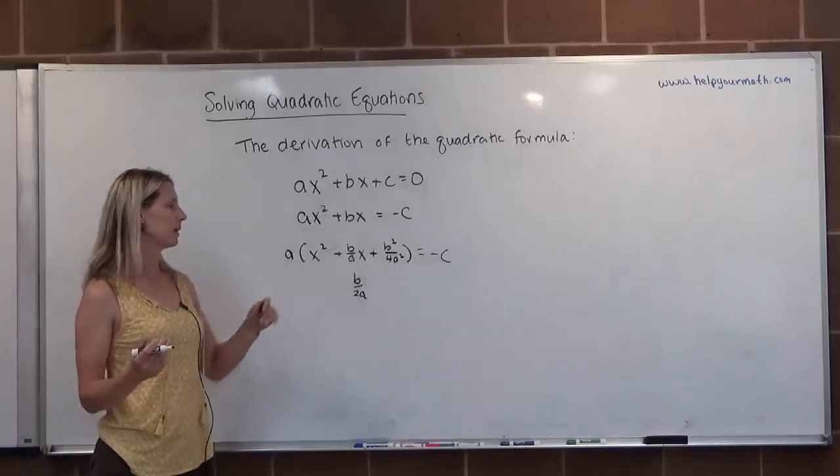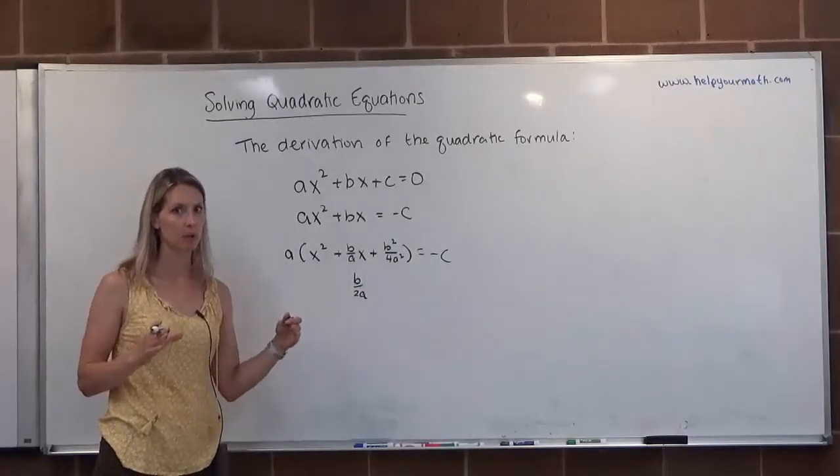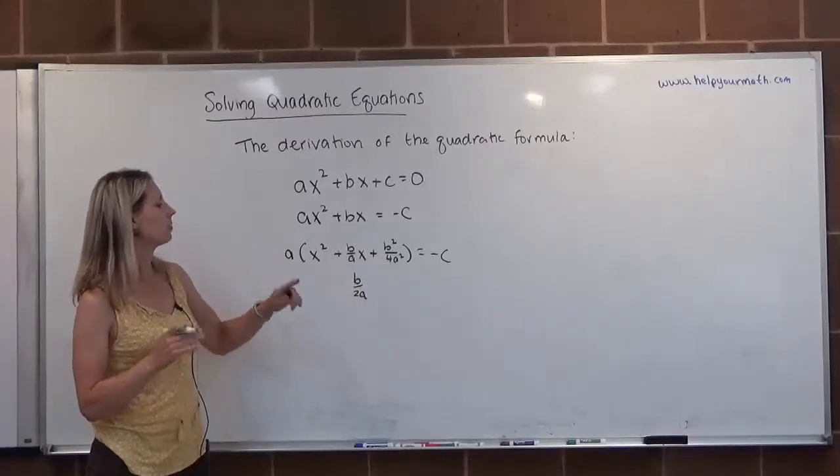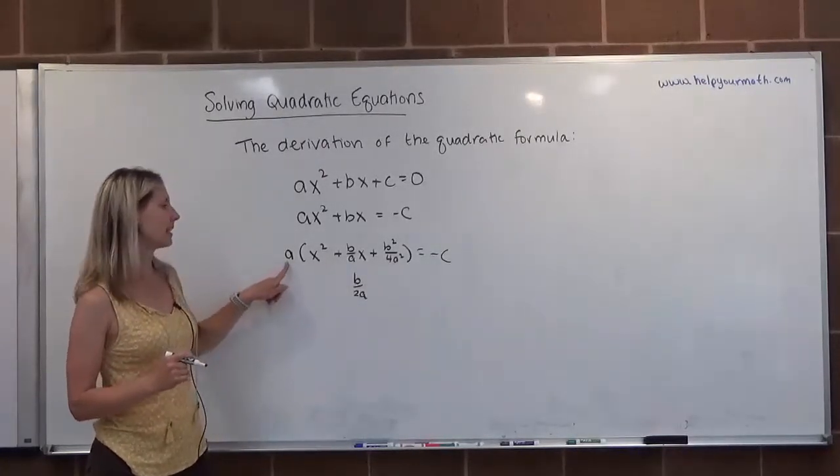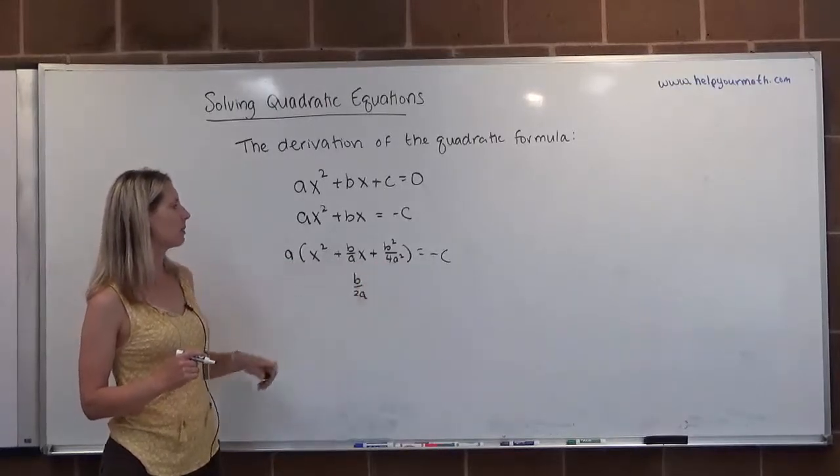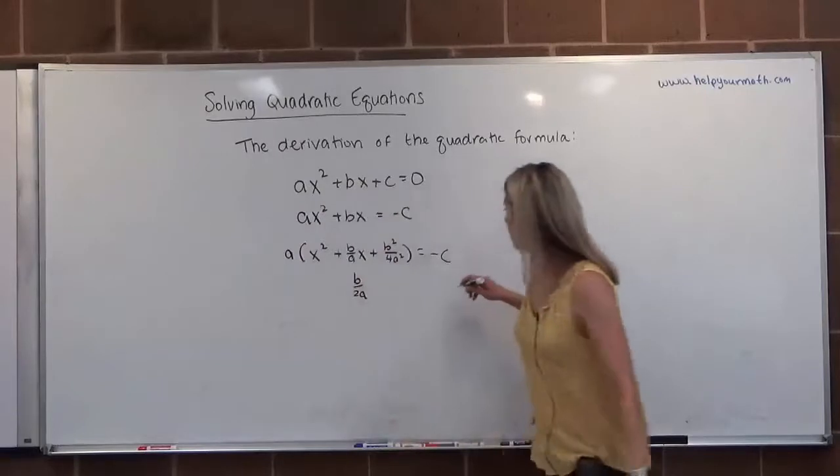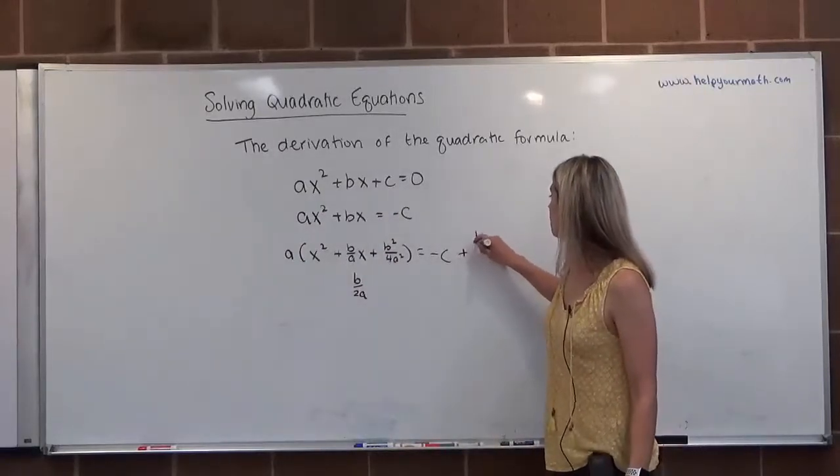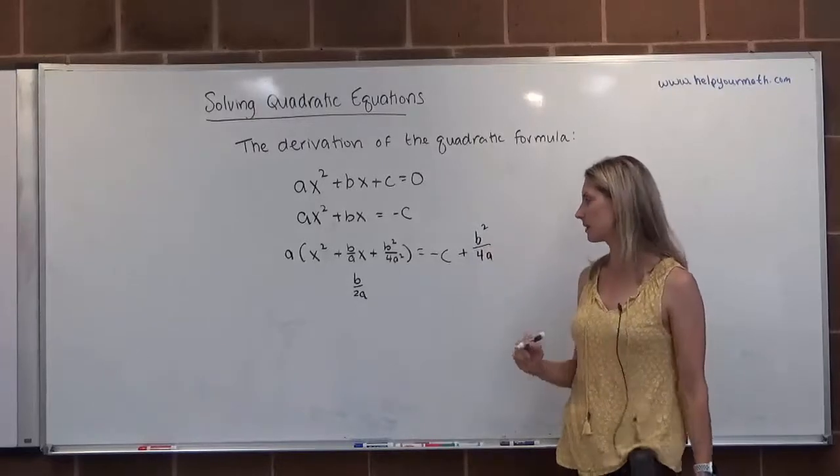Now, I can't just willy-nilly add something that didn't previously exist to one side of an equation. I need to do the same thing to both sides. But I didn't really add this to both sides because it got multiplied by a. So what I really added to this side was b squared over 4a. So I'm just going to add b squared over 4a to both sides.